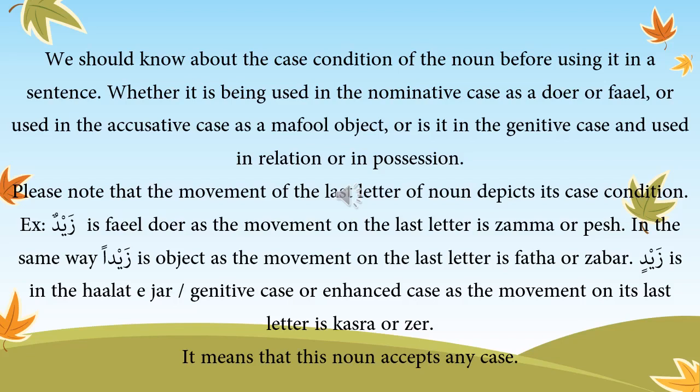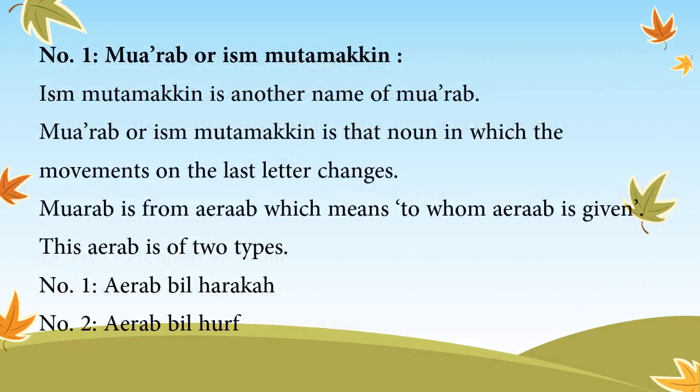It means that this noun accepts any case. Based on the case condition, the first type of noun is the mu'arab, or ism-i-mutamakin. Ism-i-mutamakin is another name of mu'arab. Mu'arab or ism-i-mutamakin is that noun in which the movements on the last letter change. Mu'arab is from a'arab, meaning to whom i'rab is given. This i'rab is of two types.